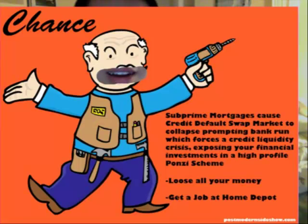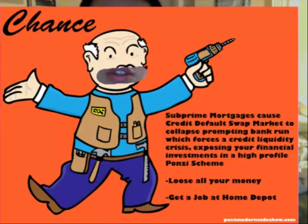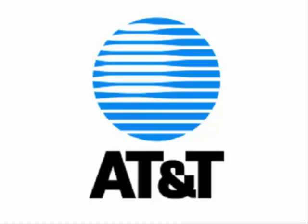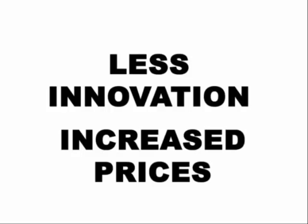A monopoly usually happens when a single company owns all or nearly all of the market for a given product or service. This would happen in the case that there is a barrier to entry into the industry. A blocked entry makes it nearly impossible for another company to enter a sector already dominated by a monopoly. Some examples of monopolies include AT&T and Standard Oil Company. Why are monopolies bad? Less innovation and inflated prices.